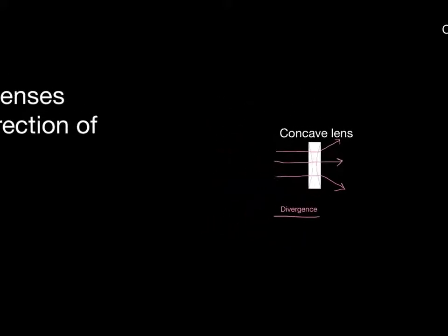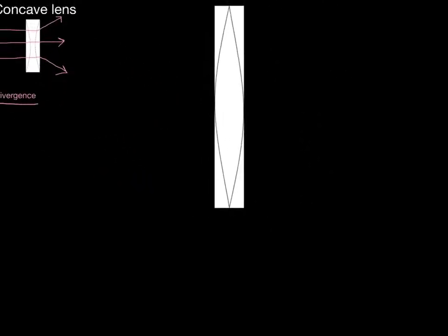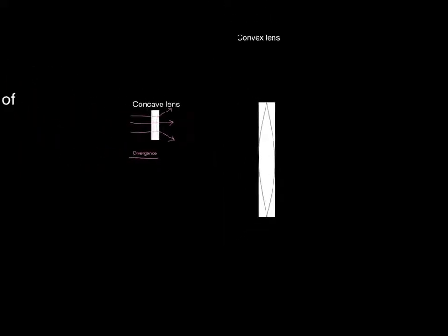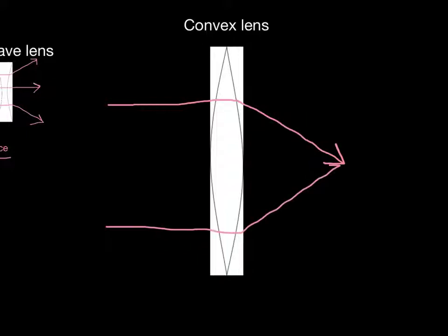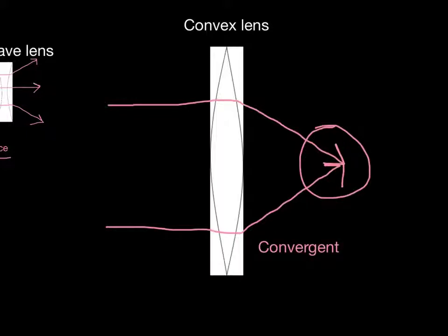Actually, the lens in your eye is not that shape — it's this shape. We call this a convex lens, so it's fatter in the middle than it is at the edges. As light gets to the edge, it refracts towards the centre of the normal line. This creates a focal point, or a focus. Light rays that refract towards the centre of the lens are called convergent.